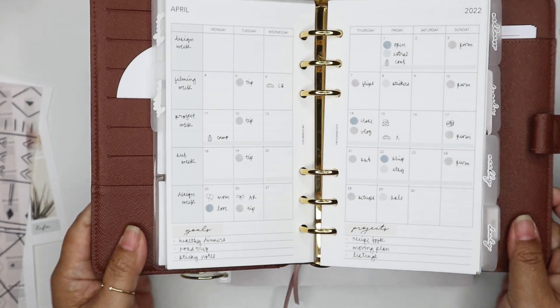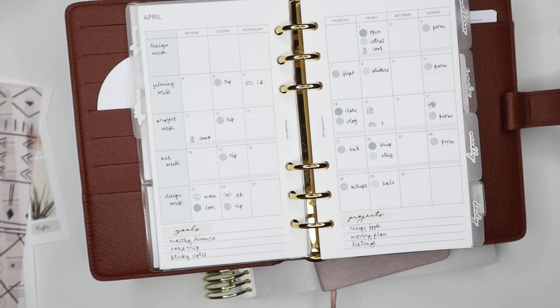That's how I set up my planners for April: my pre planner, my memory keeper and my ring planner. I hope you guys enjoyed this video. If you have any questions leave them down below. Thank you so much for watching and I'll talk to you next time. Bye!